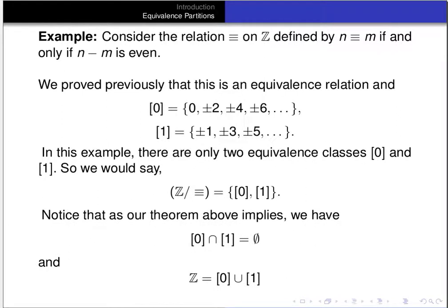As our theorem implies, these two equivalence classes are not equal to each other, so their intersection is empty. Taking their union gives all of the integers, confirming that these two equivalence classes in Z mod equivalence form a partition of the integers. That's it for this video — thanks for listening.